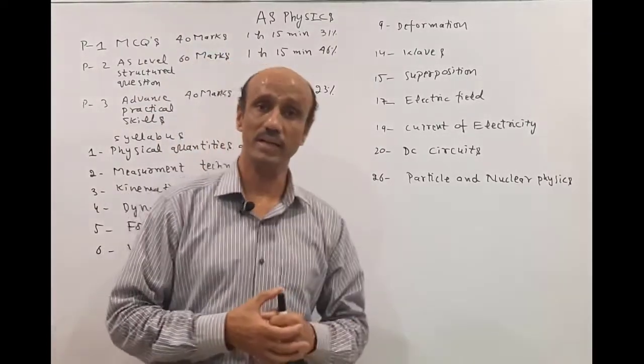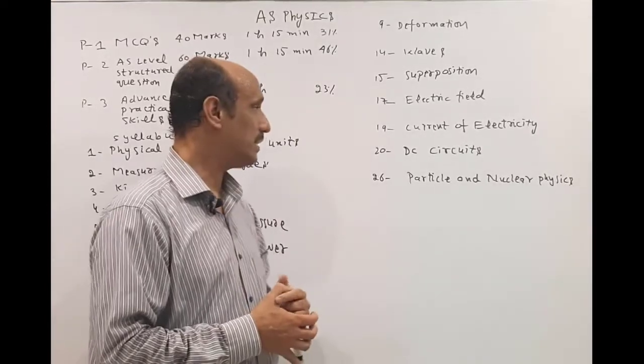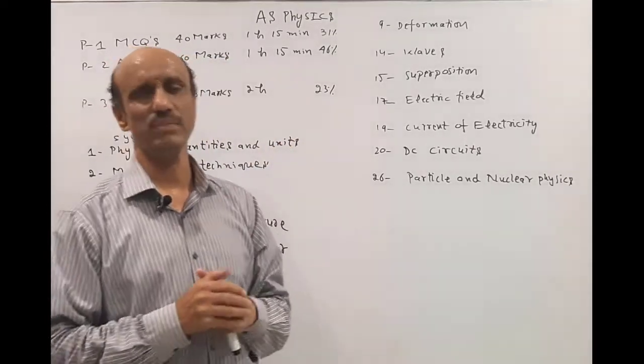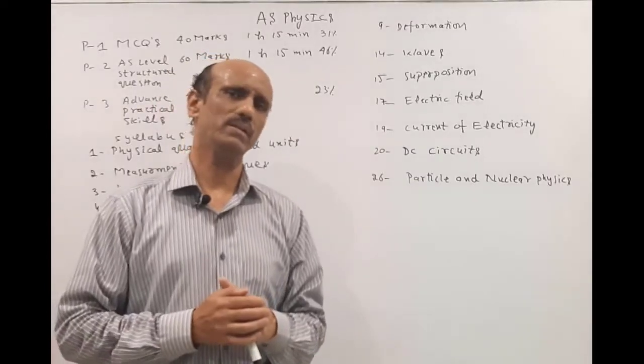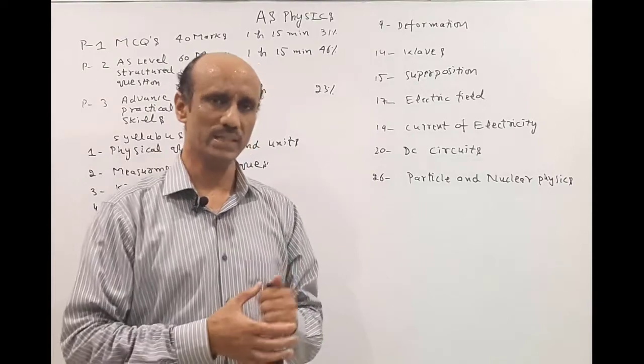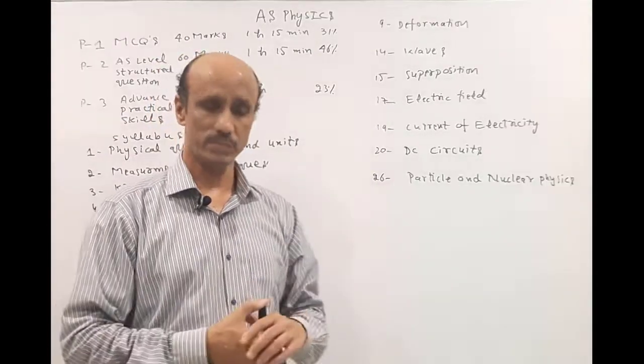And at the end, the unit number 26 is the particle and nuclear physics. So this chapter is relatively easy, about 80% is related with the O levels and then 20% is the advanced level from the AS syllabus.